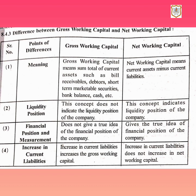Third point: financial position and measurement. Gross working capital does not give a true idea of the financial position of the company, whereas net working capital gives the true idea of the financial position. Since gross working capital equals total current assets, it can only give an idea about the current assets of the business. Net working capital, however, can give an idea about the financial position — whether the company is financially sound or not.